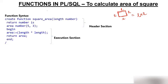The code uses CREATE FUNCTION with the function name square_area. The parameter being passed is 'length' with data type NUMBER. We are passing only one parameter whose data type is number. Then RETURN — the return type is also NUMBER, meaning the value being returned is a number. Then IS.